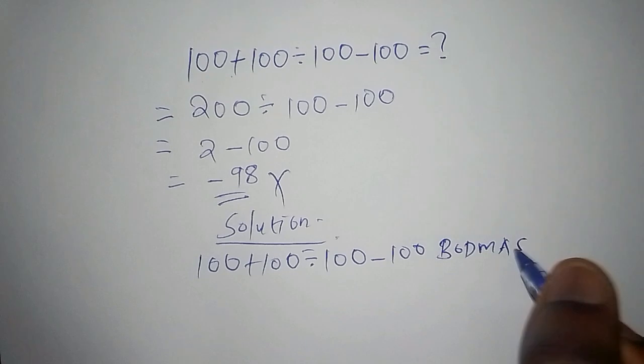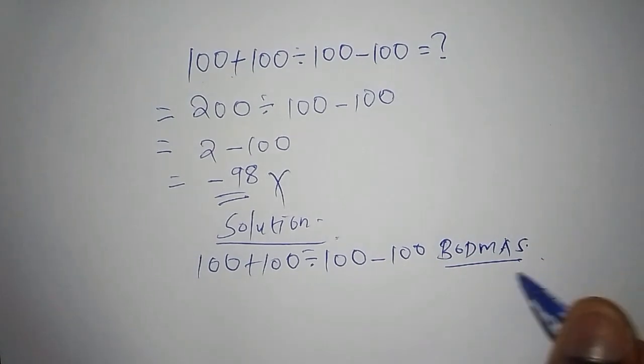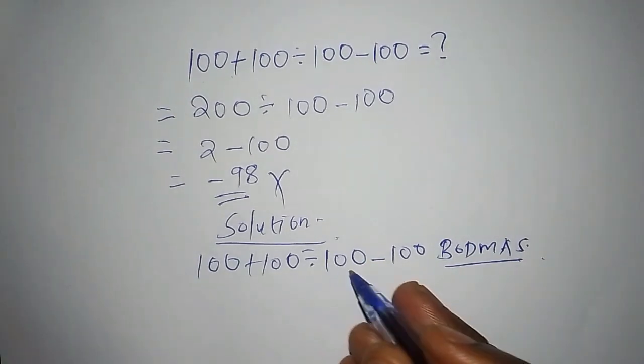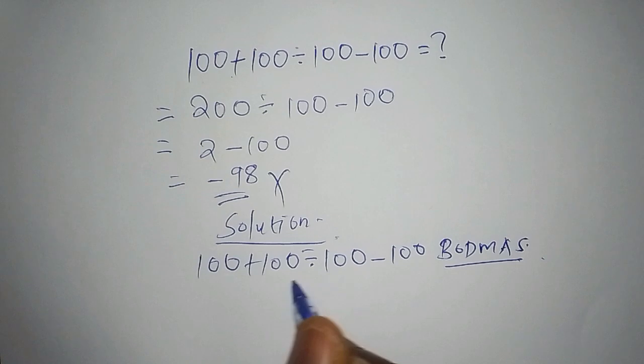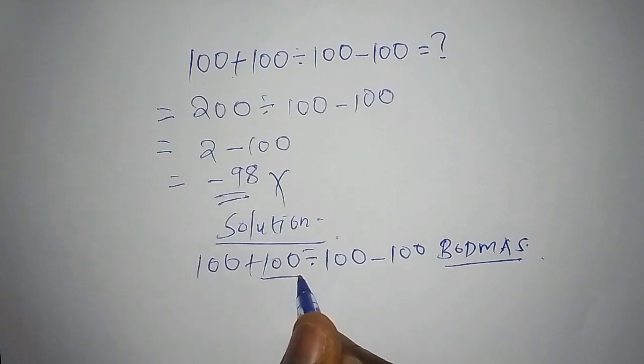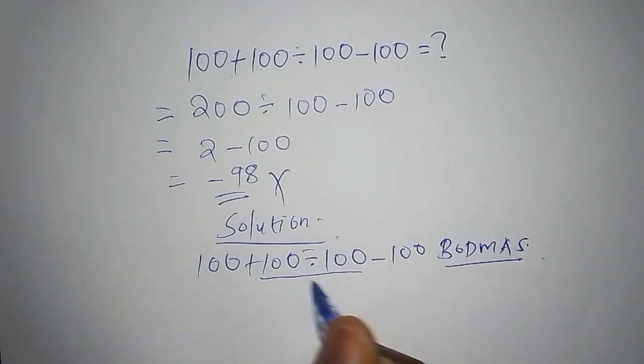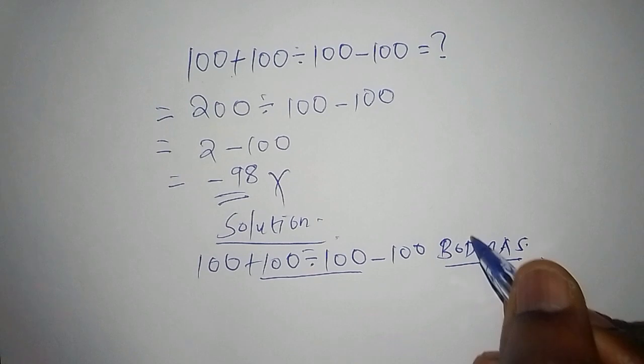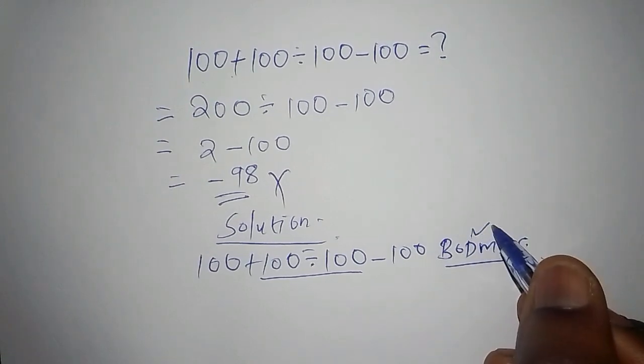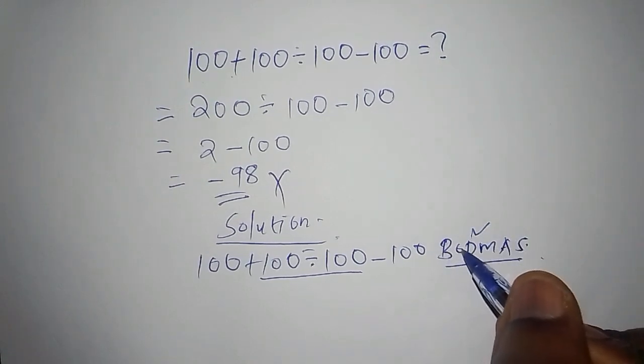The BODMAS will always guide us where do we start. Under BODMAS, our step 1 shall work out this column here. We shall start up with the division. That is why this D comes first. Before D, we have bracket and of, and those ones does not exist here.